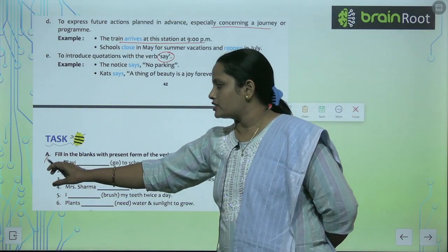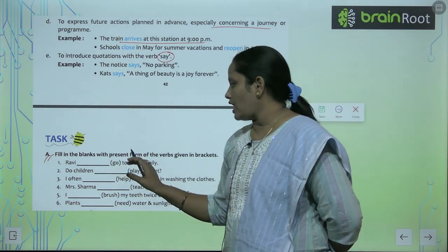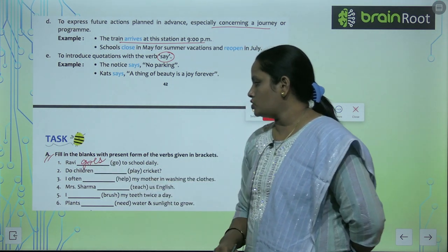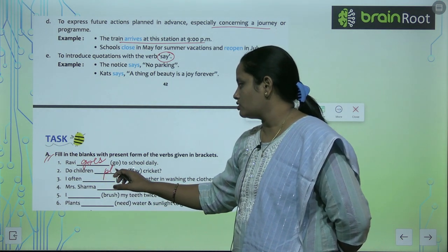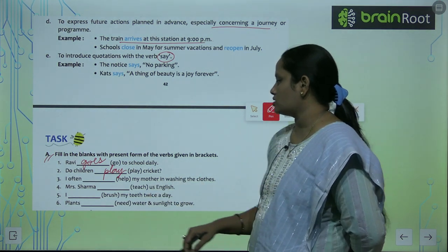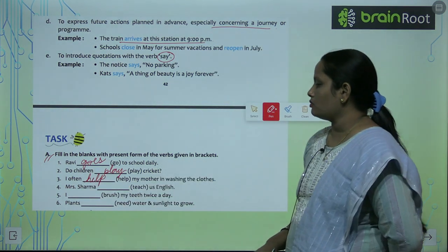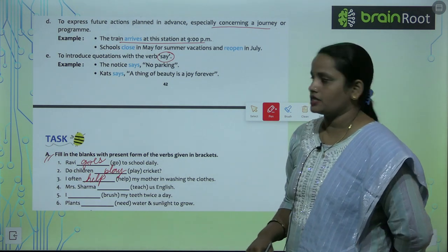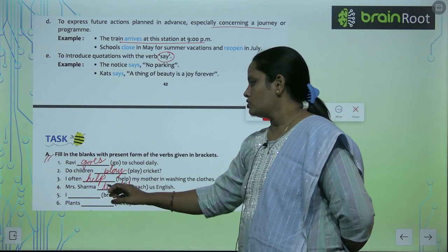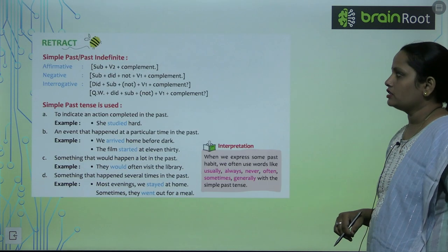Now let's move on to the exercise. Fill in the blanks with the present form of the given verbs in the bracket. 'Ravi dashes to school daily' — so 'goes' comes here. 'Do children play cricket?' — 'play' is used here. 'I often help my mother in washing the clothes' — 'help'. 'Mrs. Sharma teaches us English' — 'teaches'.